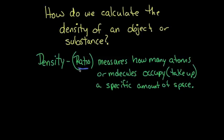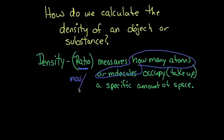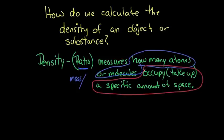You'll notice here that I wrote down the word ratio, because density is a ratio of how much mass — remember we said how many atoms or molecules, this is our mass — divided by how much space they take up. So density is really a ratio of mass divided by volume, and that'll tell you how many molecules are packed into a specific amount of space.